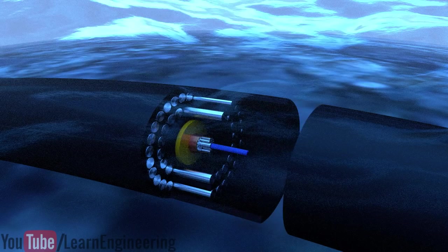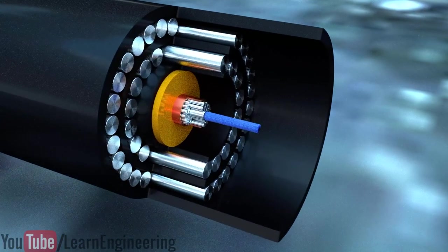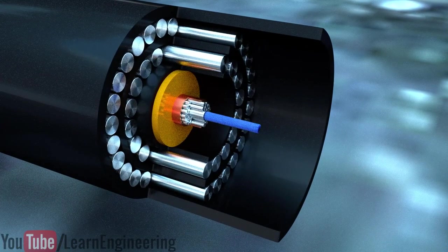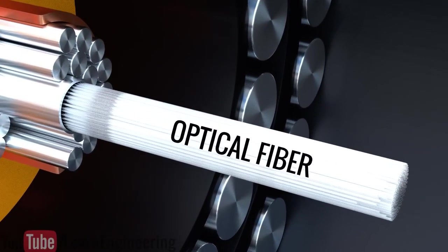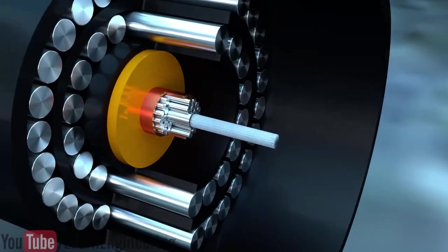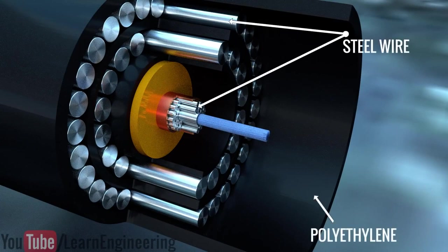A detailed cross-section view of an undersea cable is shown here. You can see that only a small portion of the cable is used for holding the optical fiber. The remaining area of the cable is a mechanical structure for protection and strength.